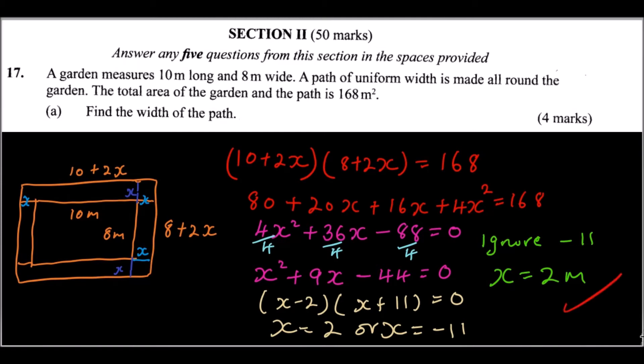There you get four marks: one mark for forming the quadratic equation, one for the factors, one for solving the quadratic equation, and one mark for the correct answer. That is how you work out part a of question 17.